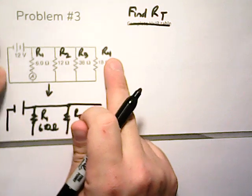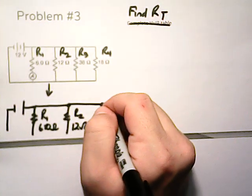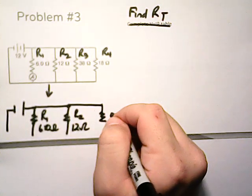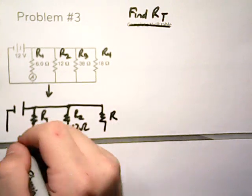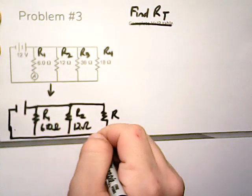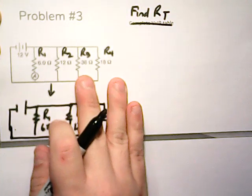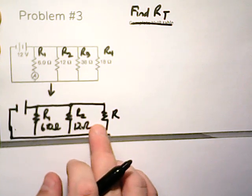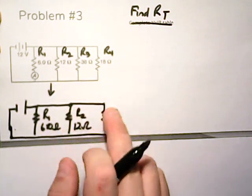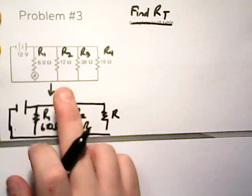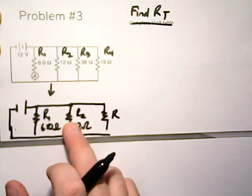And then we're going to combine R3 and R4 into some new number, which we'll just call R. So the goal is we're going to combine these two in order to make one. So R3 and R4 become R. R1 stays the same, R2 stays the same.